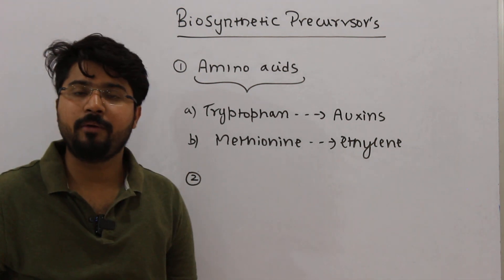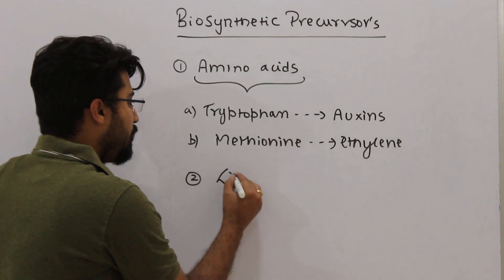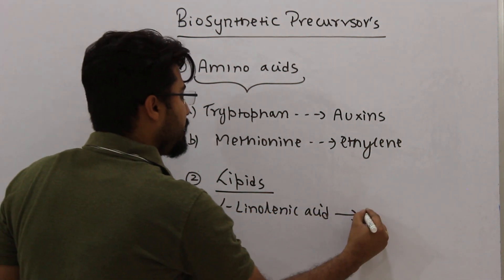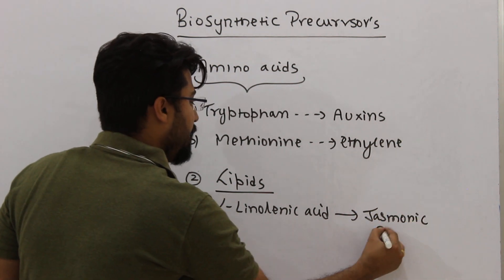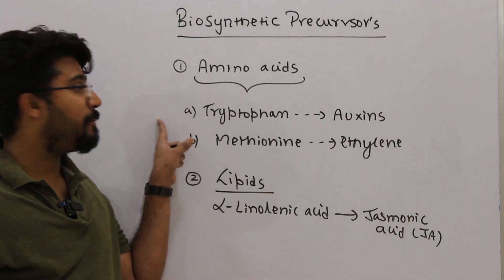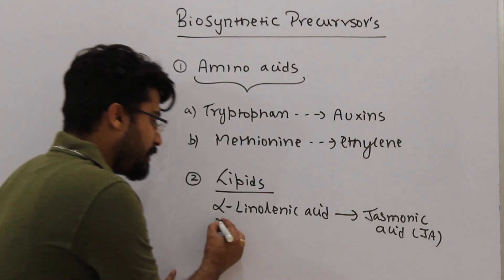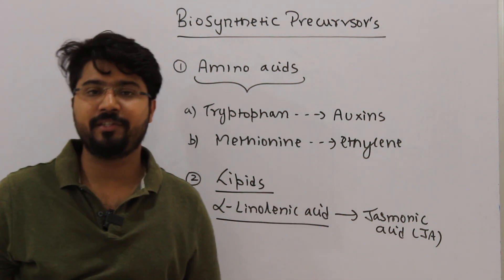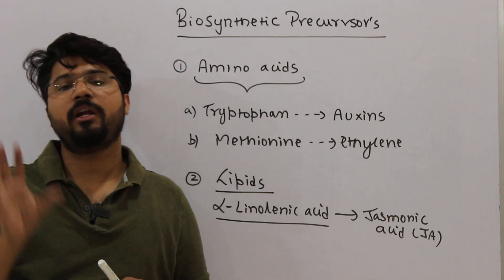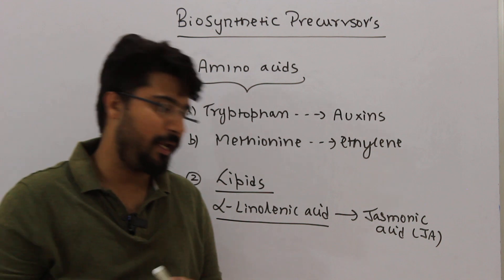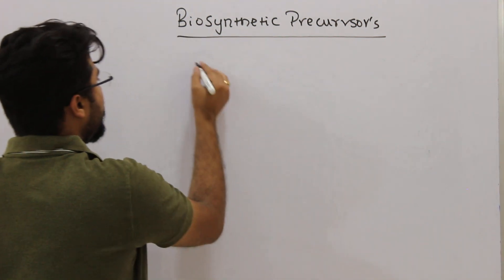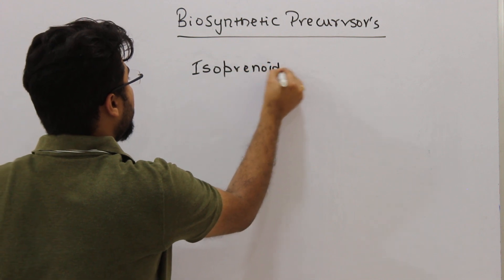The second possibility is that PGRs can also be synthesized from lipids. The example is alpha-linolenic acid — from alpha-linolenic acid there is synthesis of jasmonic acid (JA). So from amino acids: tryptophan gives auxins, methionine gives ethylene. From lipids: alpha-linolenic acid gives jasmonic acid. The third and last pathway is the most important one, with the maximum number of PGRs synthesized through it, and that pathway is known as the isoprenoid pathway.